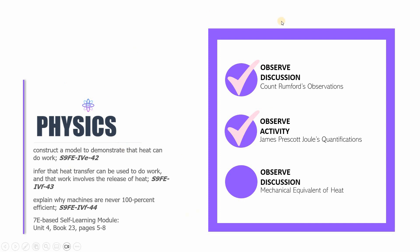Remember that in this session, these parts are focusing on training you on how to construct a model to demonstrate that heat can do work. It also trains you to infer that heat transfer can be used to do work, and that work involves the release of heat. And then the last learning competency for this session is you should be capable of explaining why machines are never 100% efficient. Every single part of this session is found on pages 5 to 8 of the 23rd book of the 4th unit of my 7E-based self-learning module in Science 9. This is R.CJ, and I hope that I will see you in the next video lesson. Have a great day!